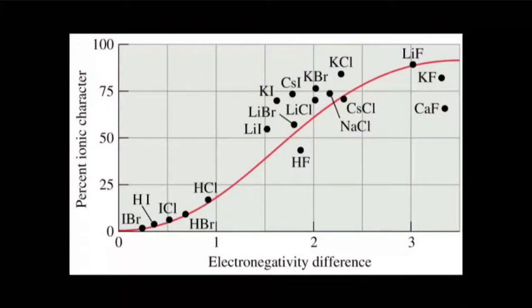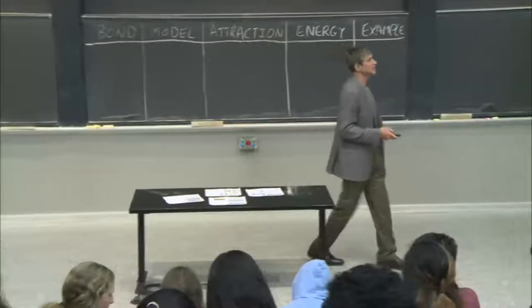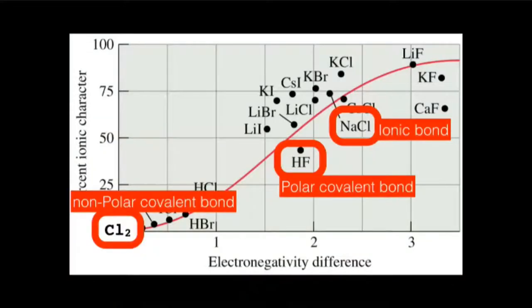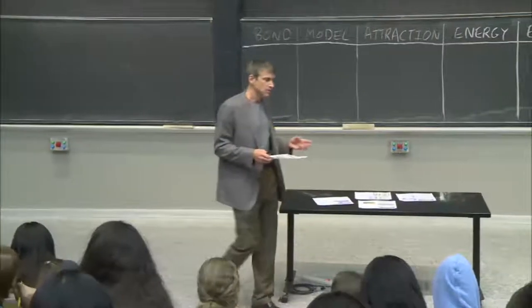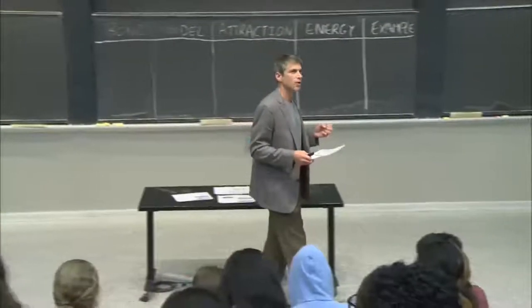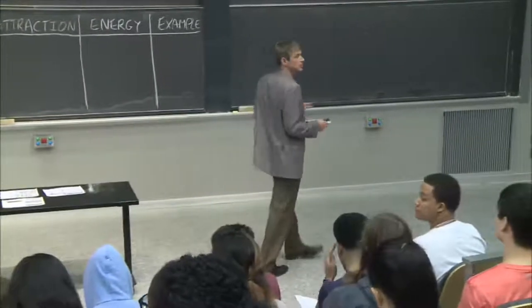Today we are talking about bonding between molecules. We have talked a lot about bonding within molecules, and that got us to saying things like you can use electronegativity to say you have an ionic bond, a nonpolar covalent bond, or a polar covalent bond. But today we're going to talk about how these molecules bond together and what sorts of interactions they can have.